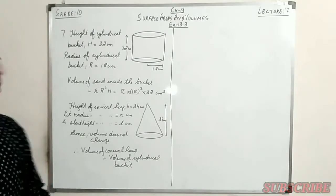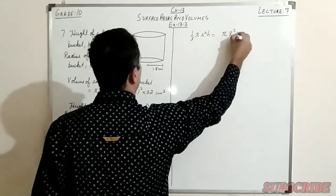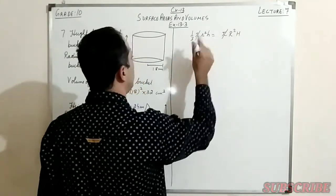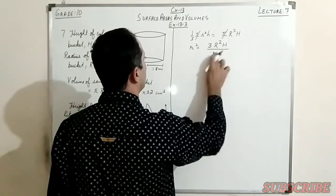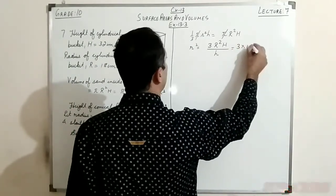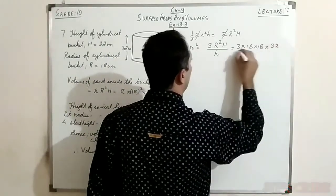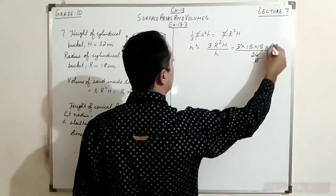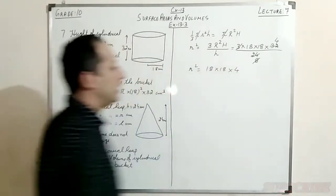For the cone, the formula would be (1/3)πr²h, so we write (1/3)πr²h = πR²H. We cancel out π. We need to find r, so r² = 3R²H / h. Substituting values: r² = 3 × 18 × 18 × 32 / 24. After cancellation — 32/24 gives 8/3, then 3 cancels — we get r² = 18 × 18 × 4.